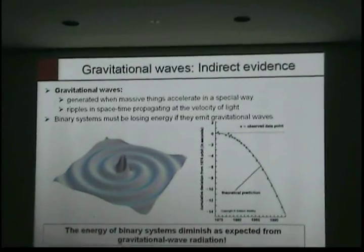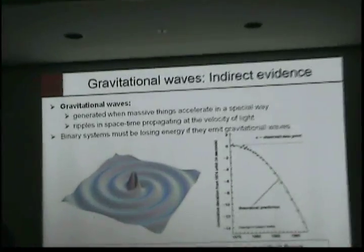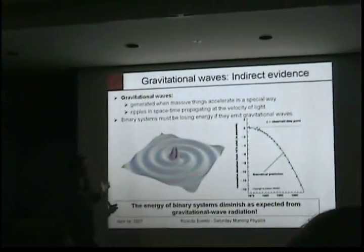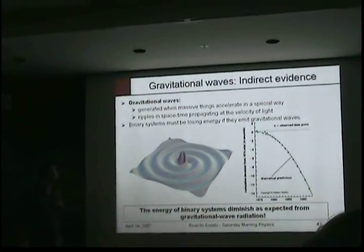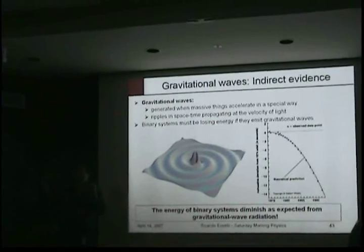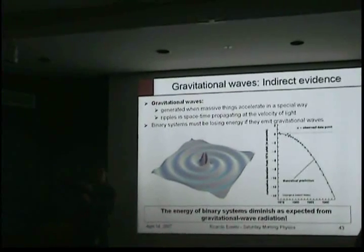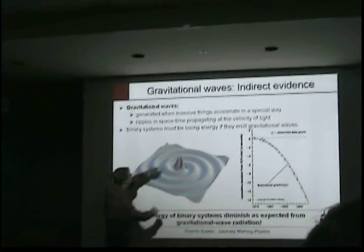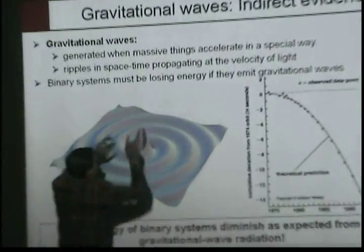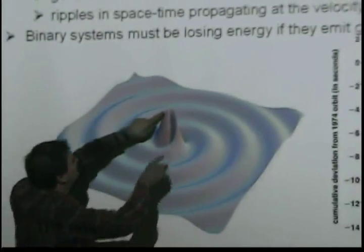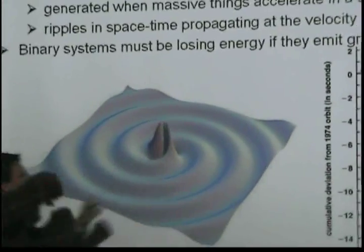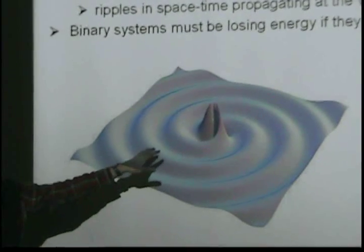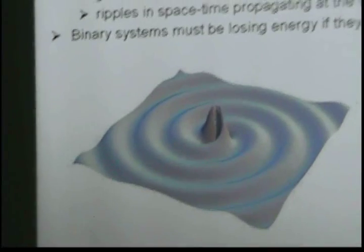Imagine a binary system — two stars orbiting each other, rotating very fast. This system is not spherically symmetric — each star may be, but the system as a whole is not — and it is accelerating. That means it should emit gravitational waves. You can picture the two stars rotating around each other, and this is what the emitted gravitational wave looks like from that system.